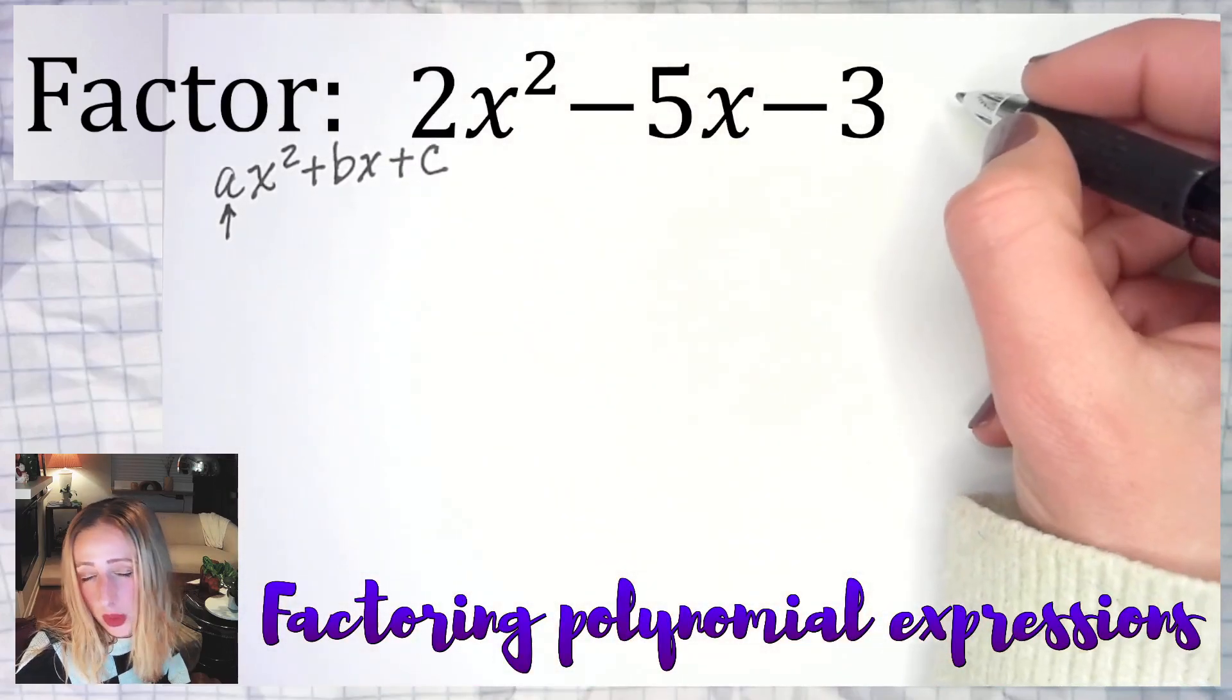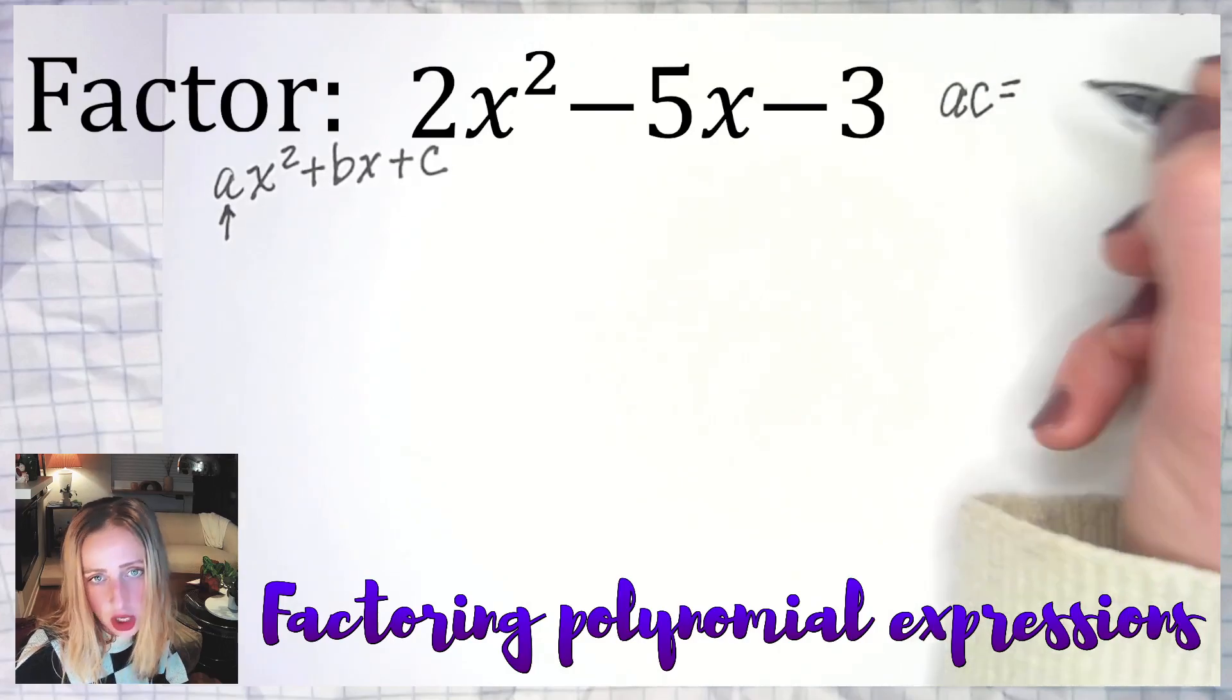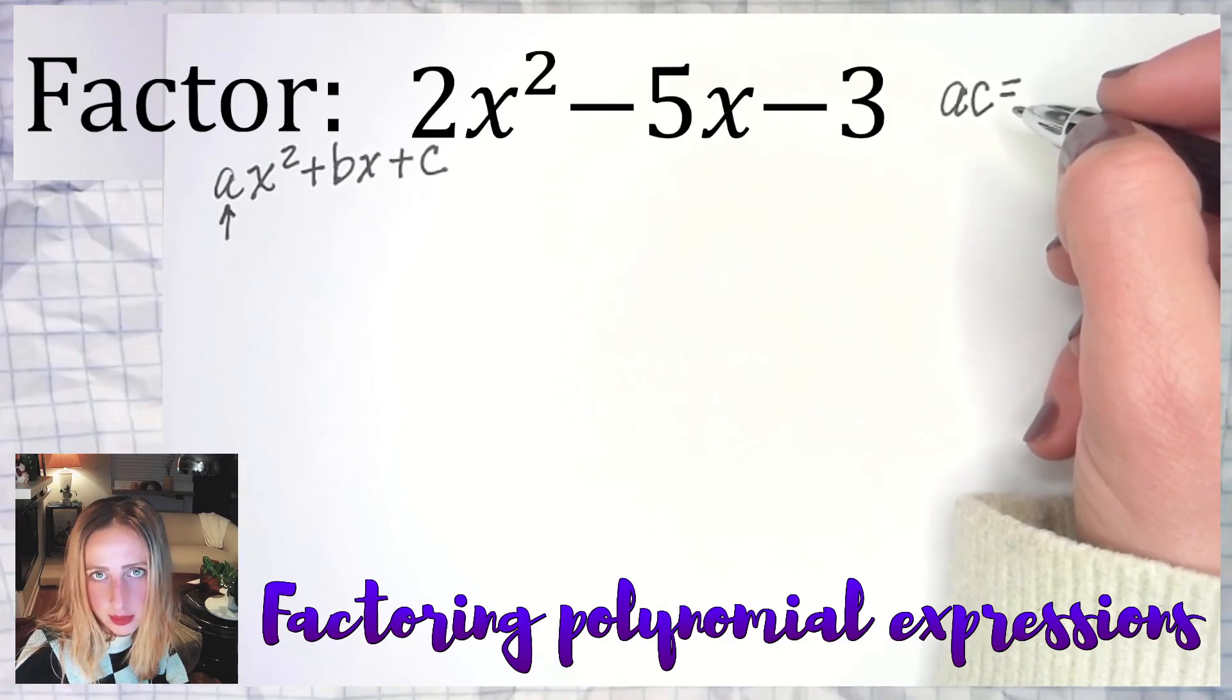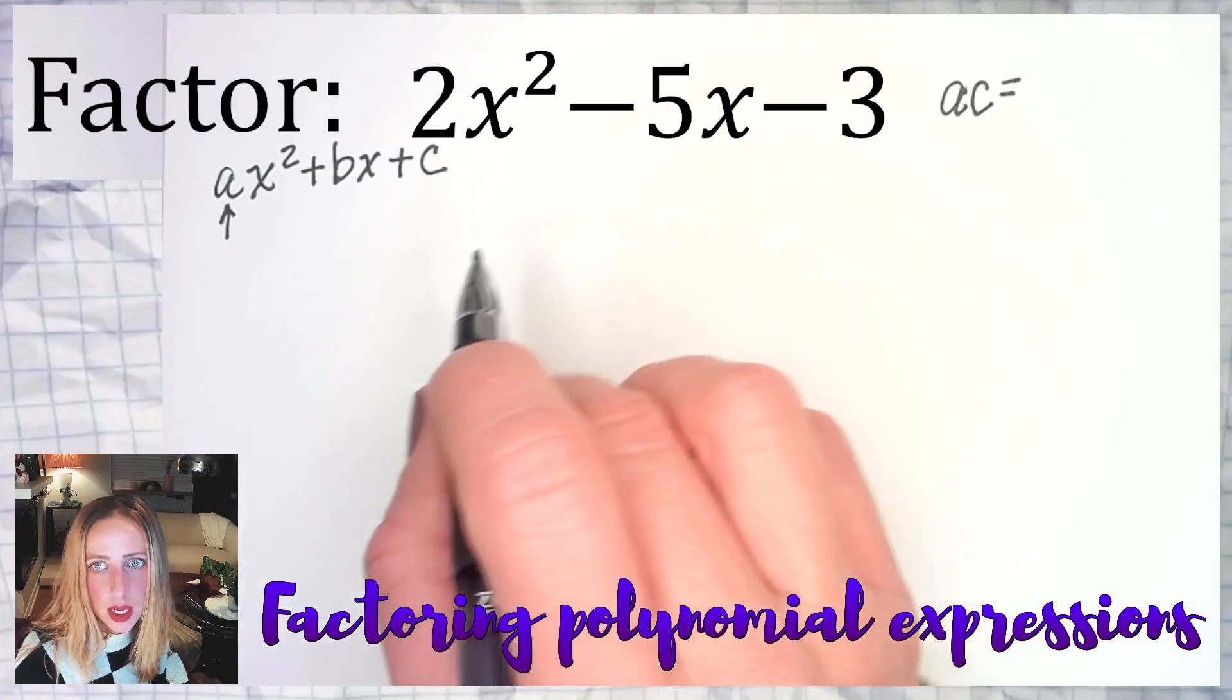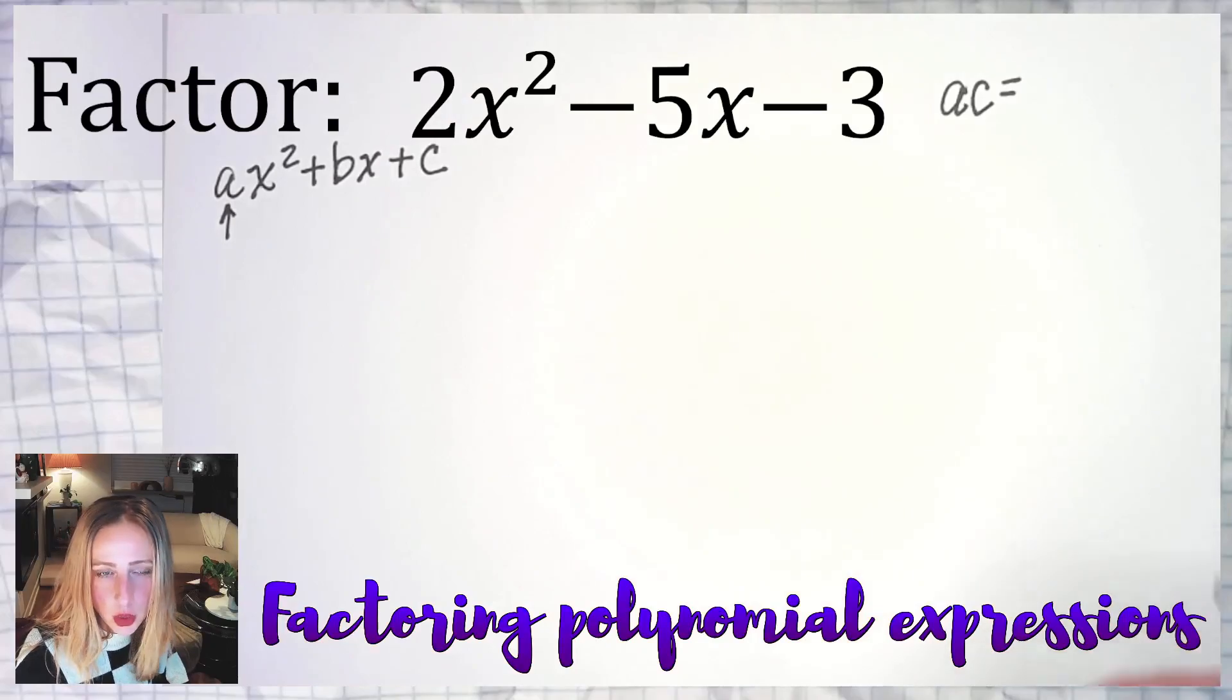Here A is equal to 2. We're going to apply something called the AC method with grouping. That means you're going to multiply A and C to start. A is equal to 2, not 2x², just 2. B is equal to negative 5, not negative 5x, just negative 5. And C is equal to negative 3. If your expression is not in standard form, you have to put it in standard form first. A is always in front of x², B is always in front of x, and C is always the constant by itself.